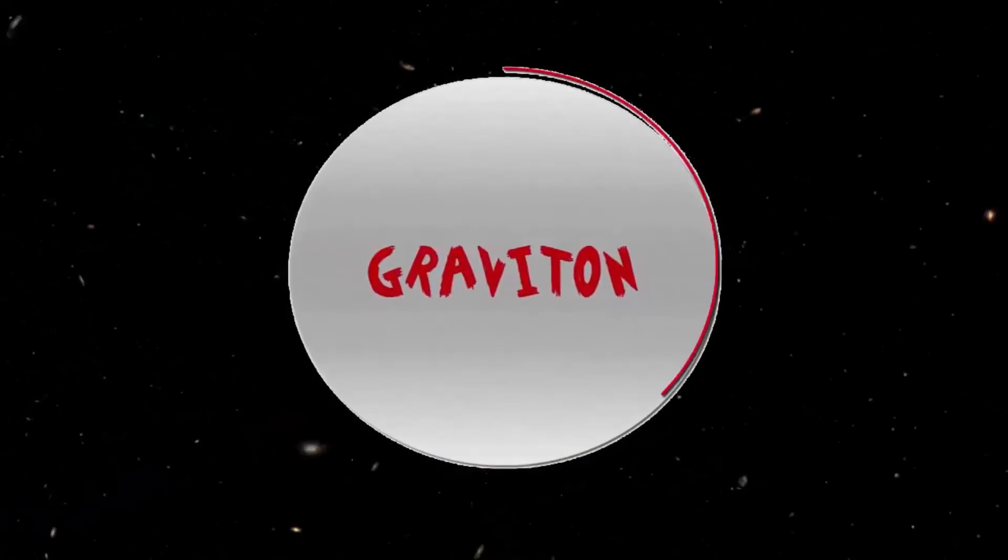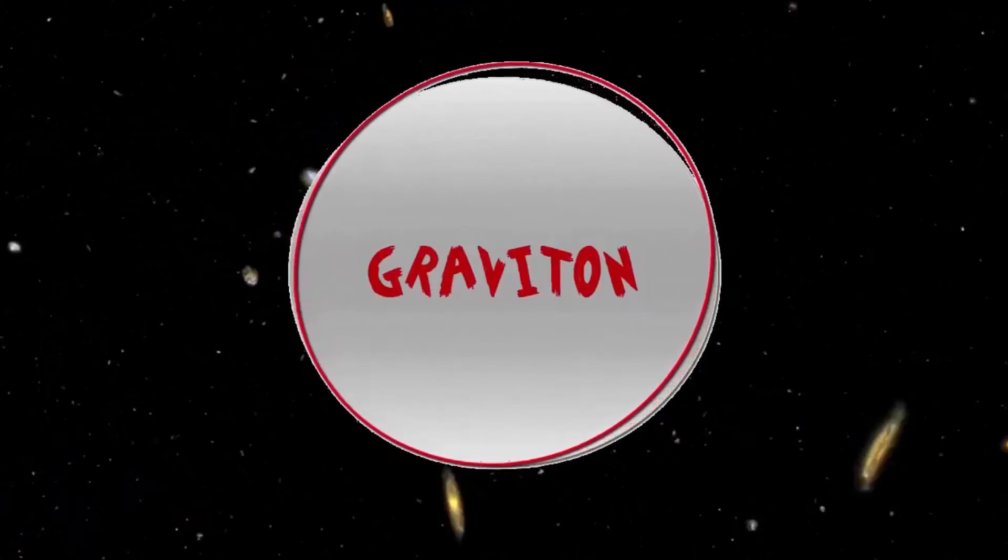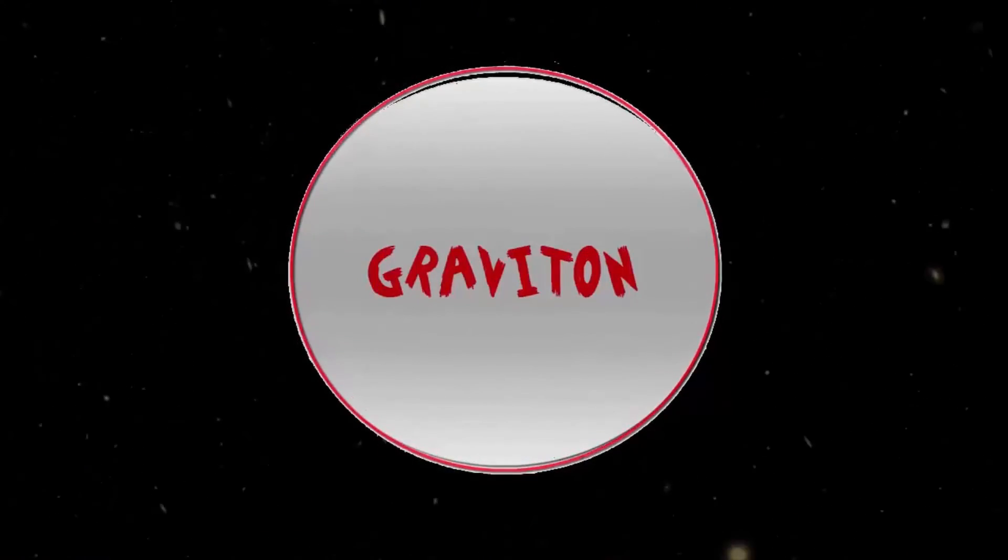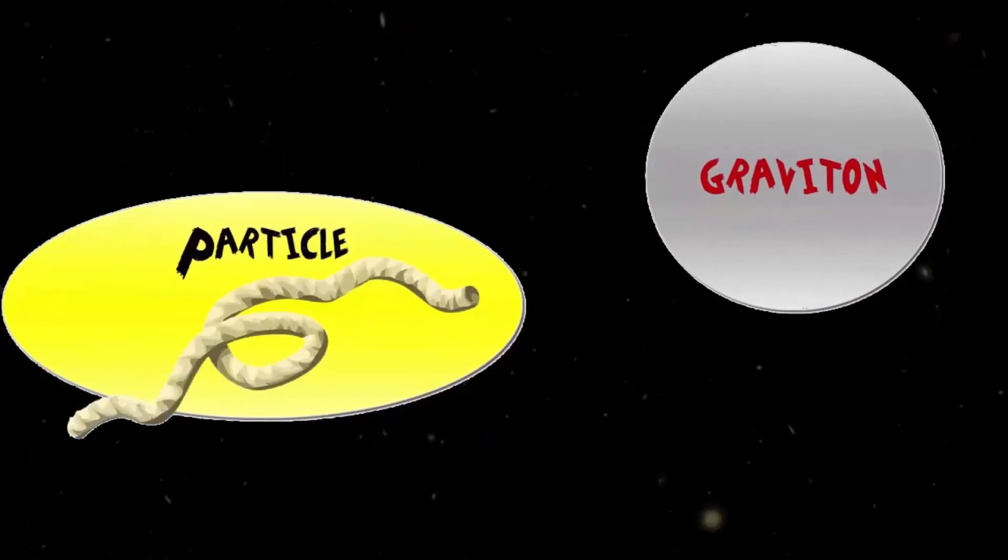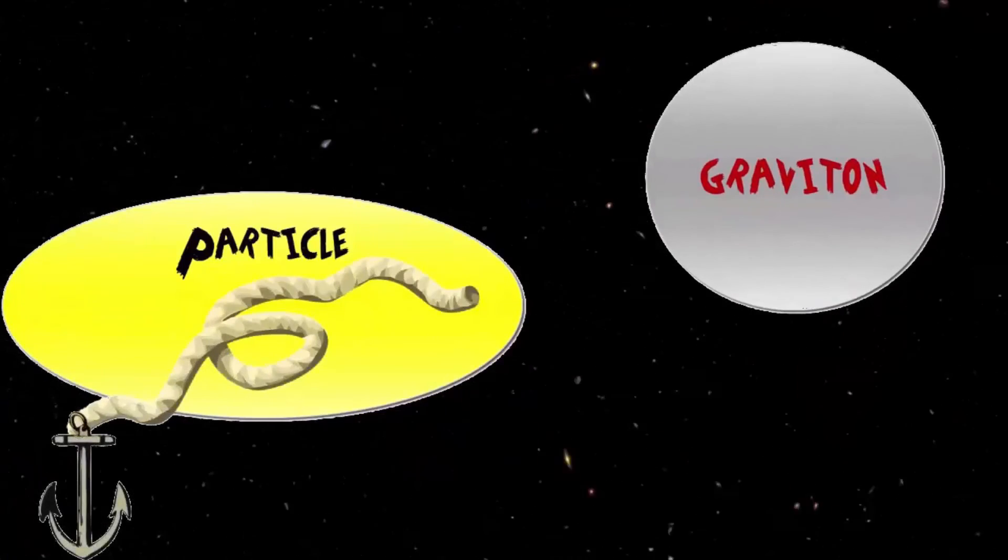These gravitons are made up of closed-ended strings that form a circle. Gravitons may not be restricted to our dimensions, but may be able to float into other dimensions, unlike other particles that are formed by open strings. These other particles are anchored to their dimensions.